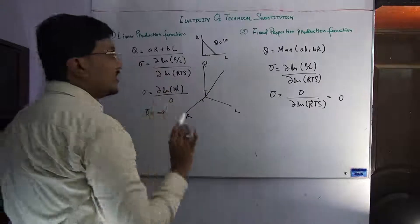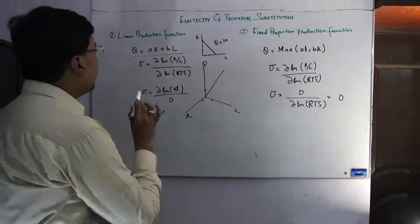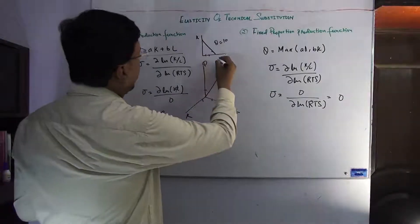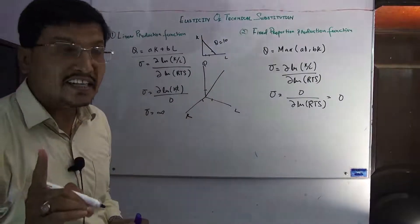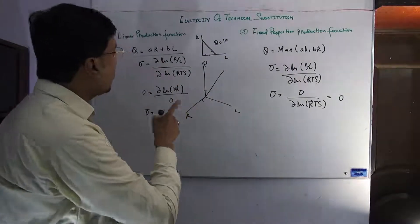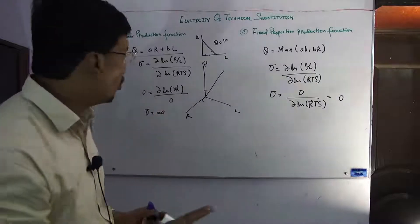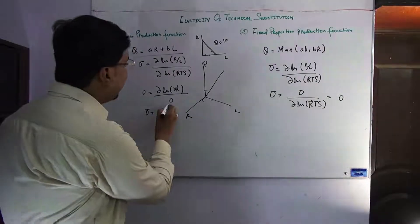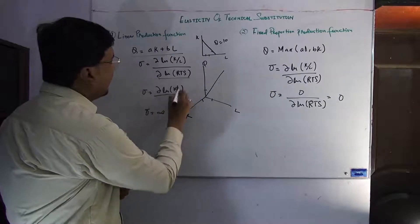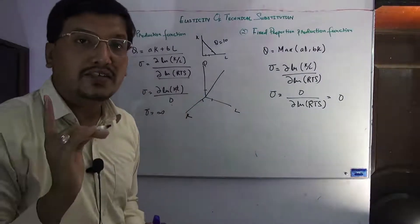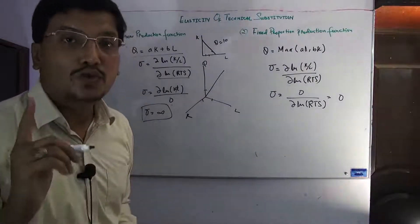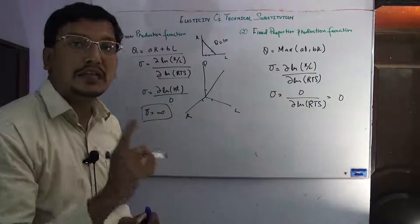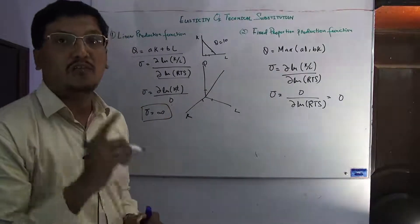We observe that on this isoquant, at every point the capital-labor ratio is changing, but the slope of the isoquant, due to the linear line, is the same. When the slope is the same, there is no change in slope, so the change in RTS is zero. If zero is in the denominator, the answer is infinite, so we have infinite elasticity of technical substitution when your production function is linear.